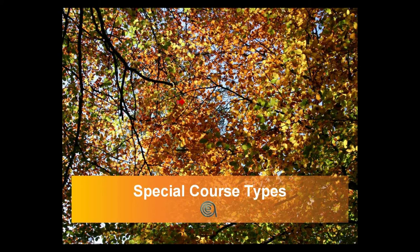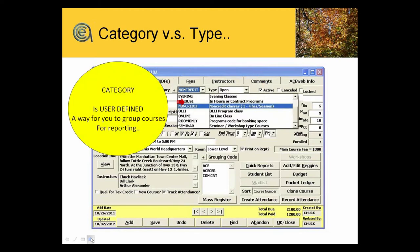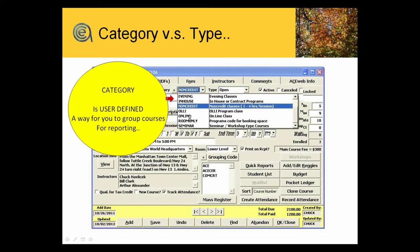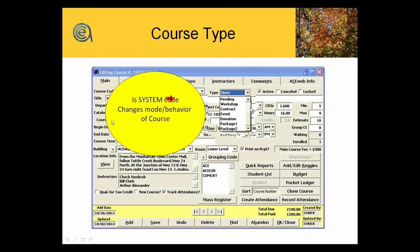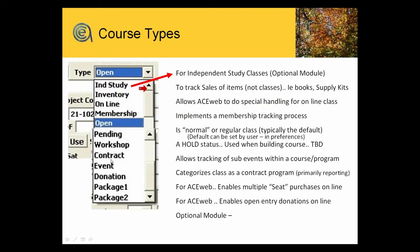Special course types. One of the things I want to clarify — there's sometimes some confusion about the idea of what's a category and what's a course type. The big deal here is that category is user-defined. Think of it as a code field you get to create for your program to help you demarcate or separate courses into different groups or categories. We give you typically, with the default systems, some samples — those are purely examples and you can certainly modify them. However, type is a different thing — type is a system code, you can't change those.